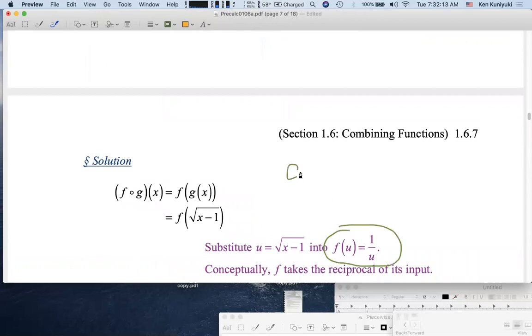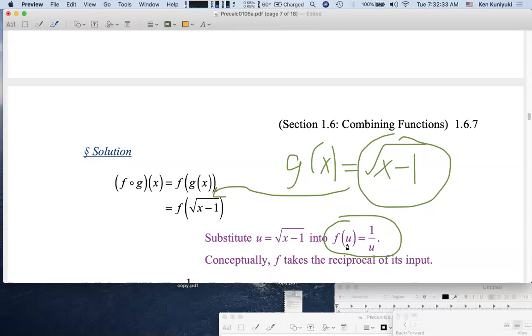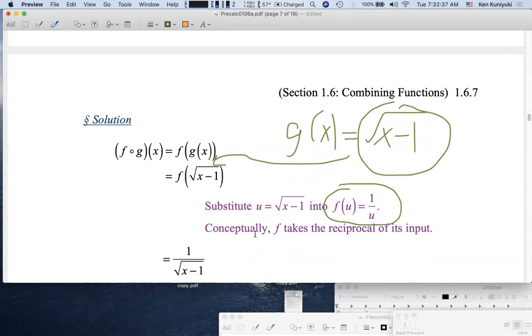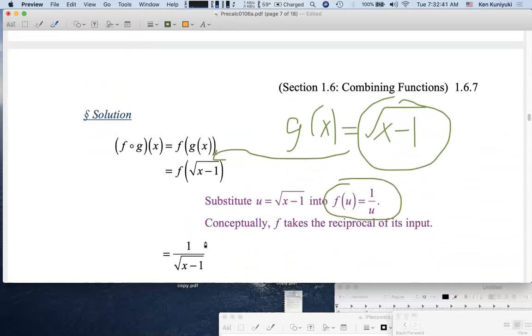Alright, so (f ∘ g)(x), remember f(u) is 1 over u, g(x) is root x minus 1. (f ∘ g)(x) is f(g(x)). g(x) is root x minus 1. What does f do to root x minus 1? Well, what does f do to any legal input? Takes its reciprocal. So we take the reciprocal of root x minus 1, we get 1 over root x minus 1. Another way of looking at this: this is f(u) where the result is 1 over u, and you substitute in. This is u, g(x) is u, you substitute this in for u. We want f(u) where u is root x minus 1. What is f(u)? It's 1 over u. What was u? It was root x minus 1. You substitute or plug in.